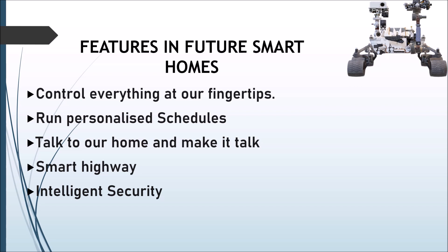Intelligent security features like door, window, and motion sensors notify us when someone tries to break into our home while we are away. We get instant alerts on our smartphone when we are not at home, or when our home is hit by fire. These are some features — some already available and some we are expecting in future smart homes.